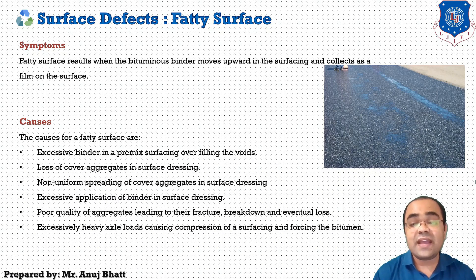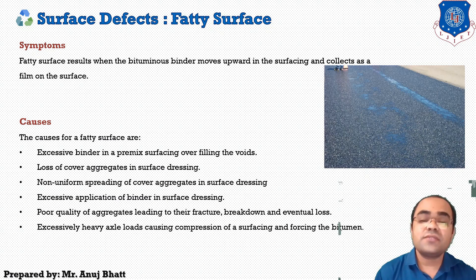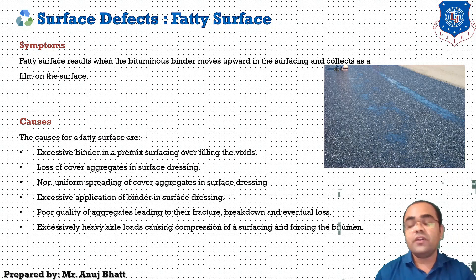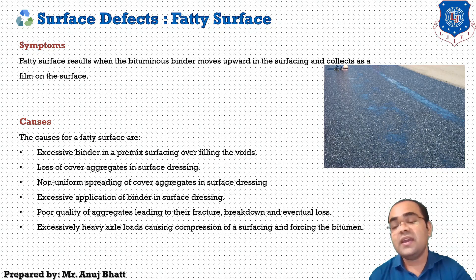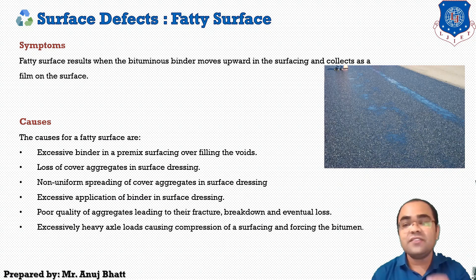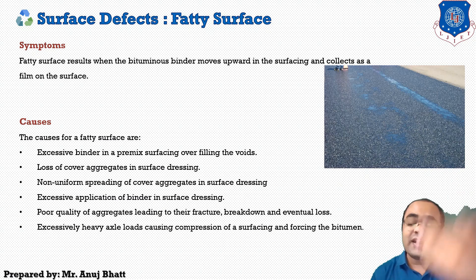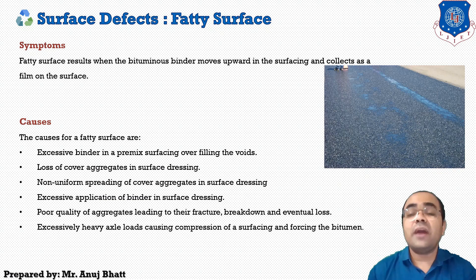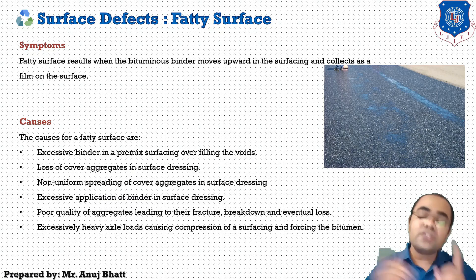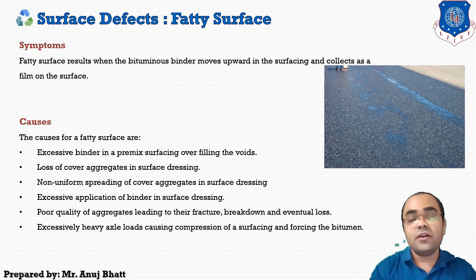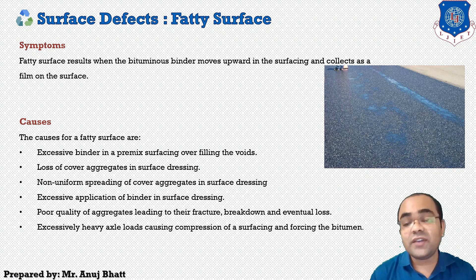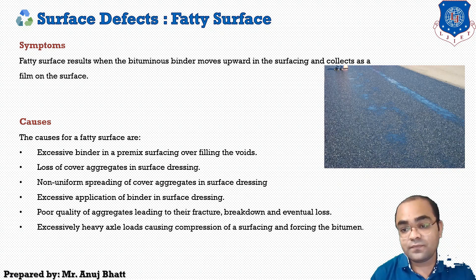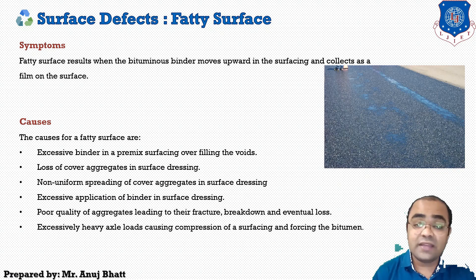The causes of fatty surface are: first, excessive binder in a premix surfacing, overfilling the voids. When applying the upper surface, filler material is added as fine aggregates, and binder is applied to bind those fine aggregates to the coarse aggregate. If binder is applied excessively, this defect can occur. Next is loss of cover aggregates in surface dressing, and third is non-uniform spreading.